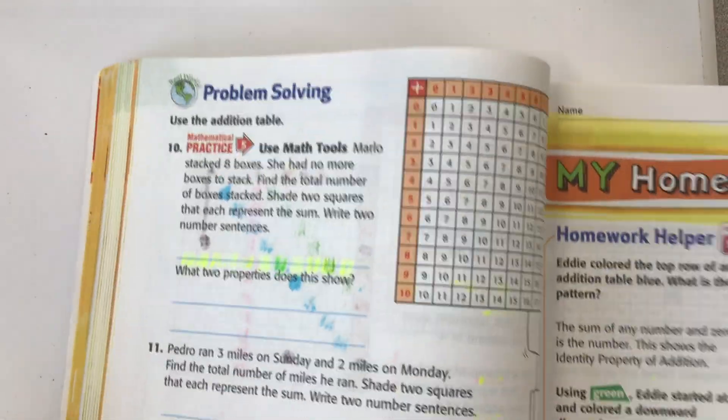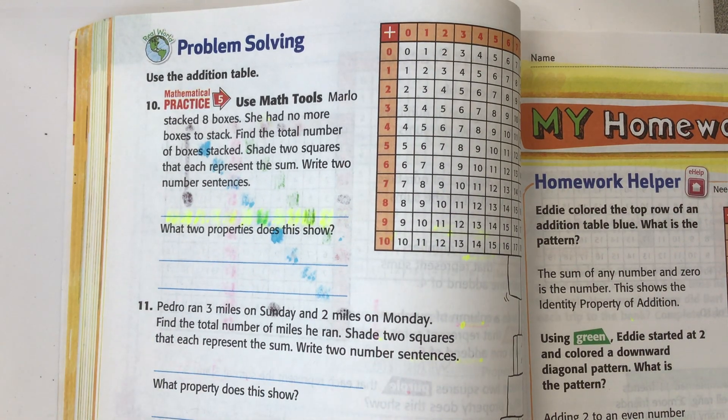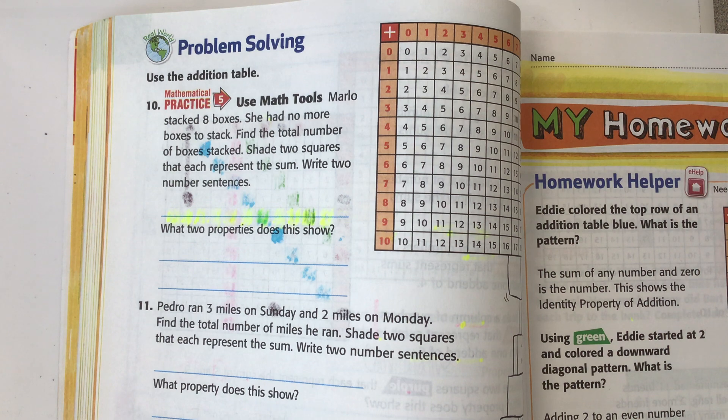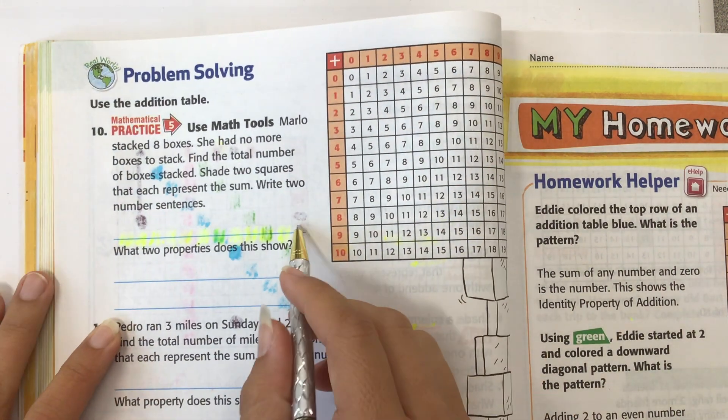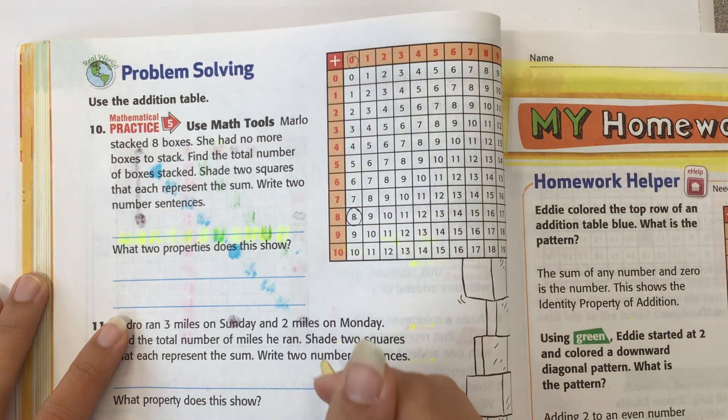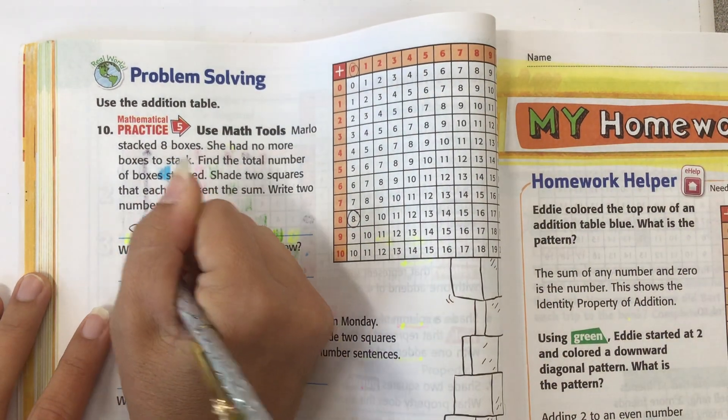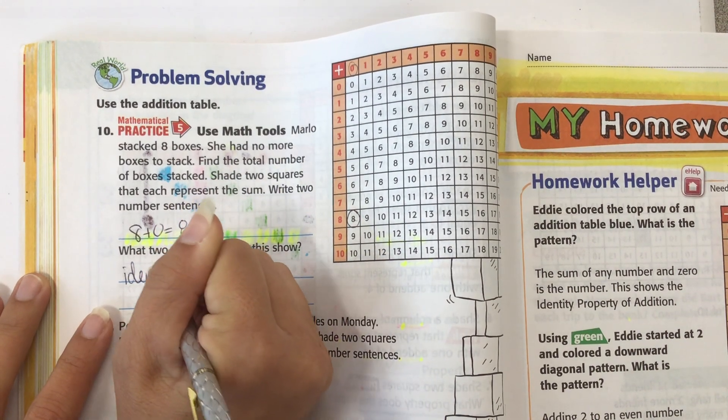Okay, page 70. Use math tools. Marlo stacked eight boxes. She had no more boxes to stack. Find the total number of boxes she stacked. Shade two numbers that each represent the sum. Write two number sentences. So if she stacks eight boxes and she has no more boxes to stack, then we know that she stacked all the boxes. She has no more. So that would be zero, would be no more. So eight plus zero equals eight. And this is the identity property.